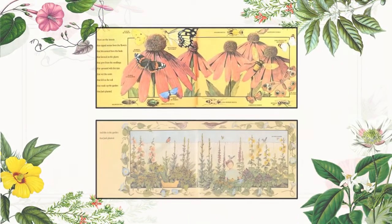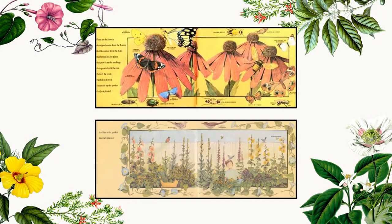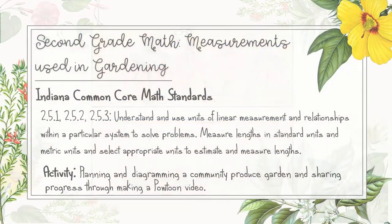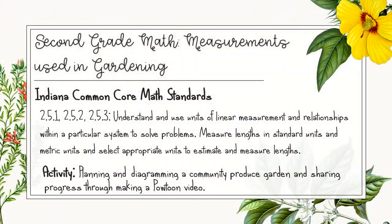This book is filled with fascinating illustrations that inform the reader about the tools used in the garden, the little creatures that visit it, and all the beautiful plants that grow within it. Planning a garden requires some basic math skills, like being able to measure lengths to know how much space each plant needs.